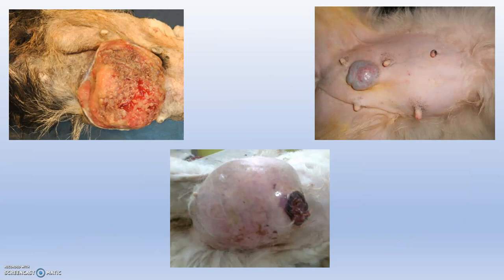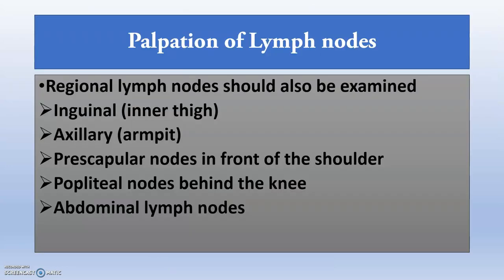Regional lymph nodes should be examined when evaluating mammary tumors. Relevant lymph nodes include the inguinal, axillary, abdominal, and popliteal lymph nodes. Assessment of lymph node involvement helps determine whether a CMT is malignant or benign.